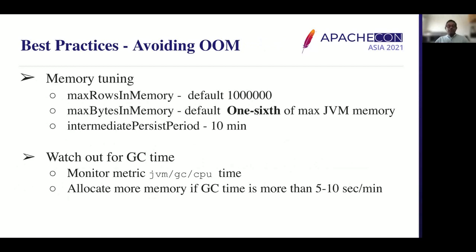Let's see how to avoid out of memory. It's commonly seen that ingesting large events or using data sketches consumes more memory. It's good practice to set max bytes in memory or max rows in memory. This ensures data is persisted to disk once the peon reaches the limit. Watch out for GC time — allocate more memory if GC time is more than 5 to 10 seconds per minute.